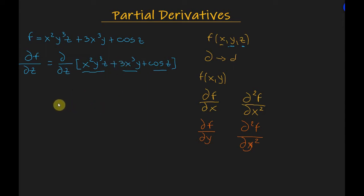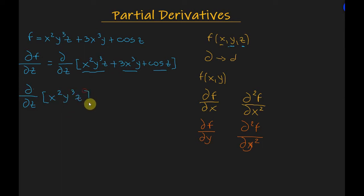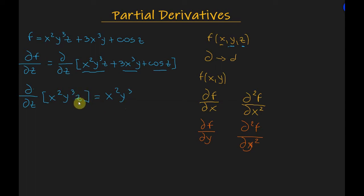So we look and see that the partial derivative with respect to z of the first term, x squared y cubed z, is equal to: we have the z variable here, and x squared y cubed is treated as a constant, so we write it here. The derivative of z is simply one, so we don't write the one explicitly.